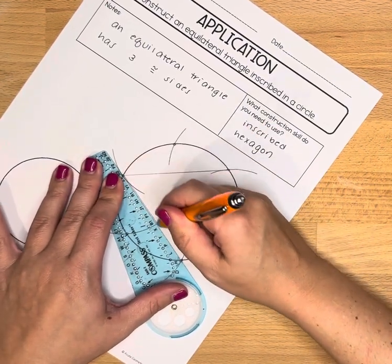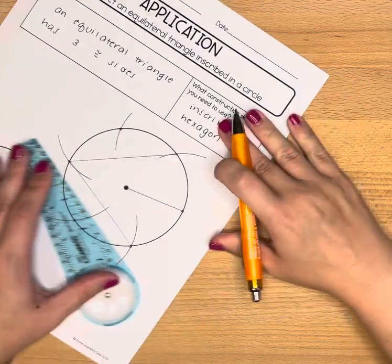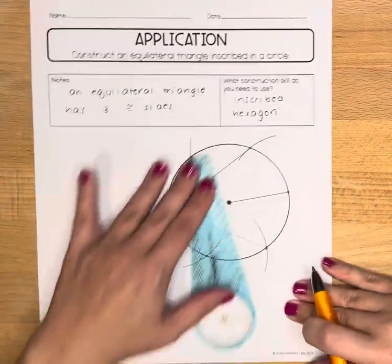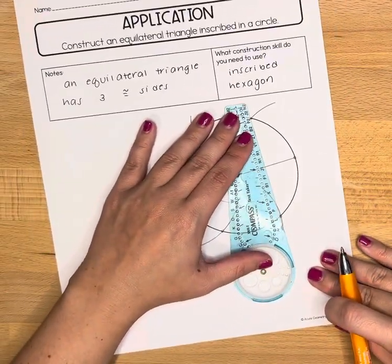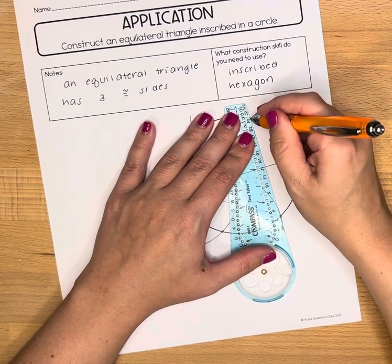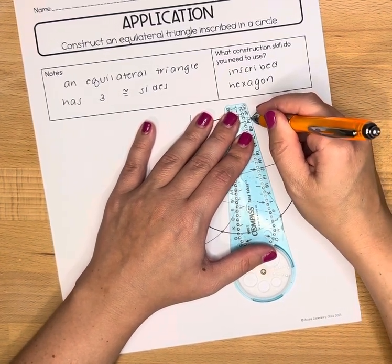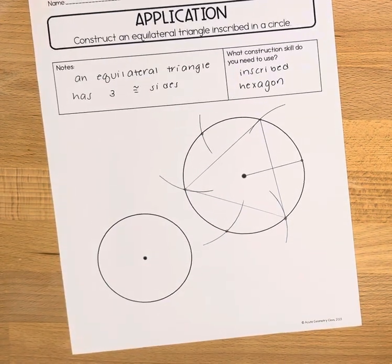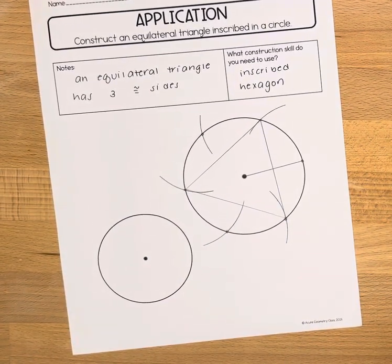We are creating inscribed angles. That means those angles are formed by chords and the vertex of those angles is on the circle. And there's our inscribed equilateral triangle.